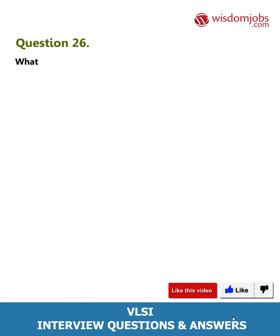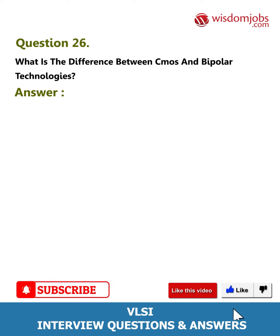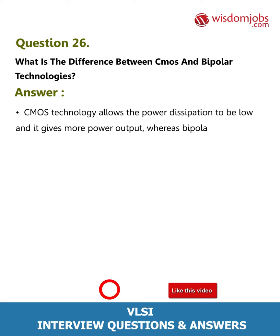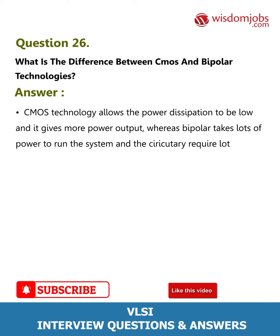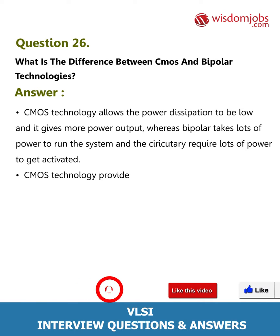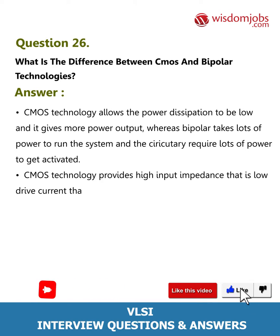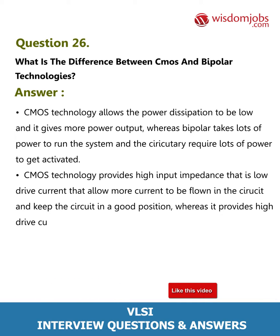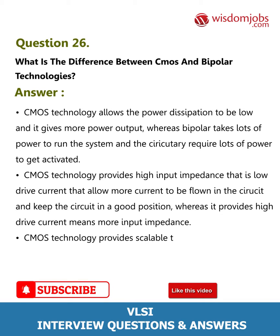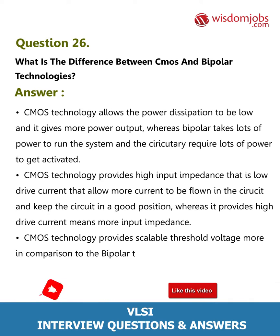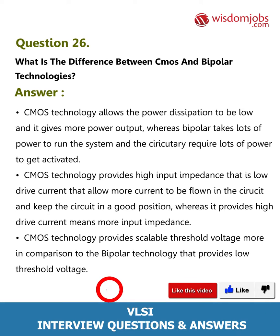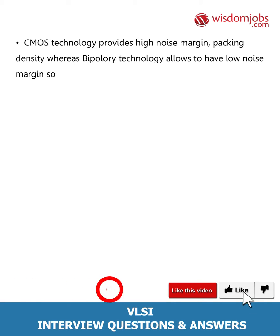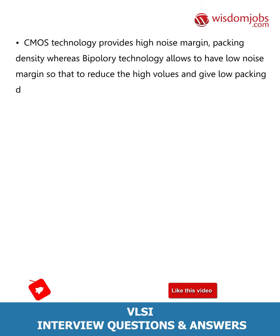Question 26: What is the difference between CMOS and bipolar technologies? CMOS technology allows low power dissipation and gives more power output, whereas bipolar takes lots of power to run the system. CMOS technology provides high input impedance and low drive current, whereas bipolar provides high drive current with more input impedance. CMOS technology provides scalable threshold voltage compared to bipolar technology, which provides low threshold voltage. CMOS technology provides high noise margin and packing density, whereas bipolar technology has low noise margin and low packing density.